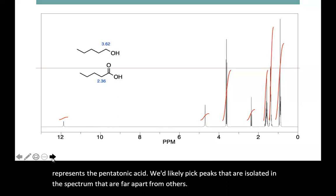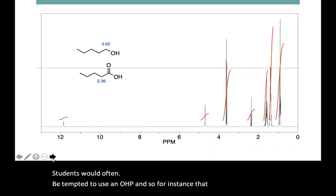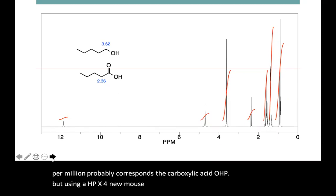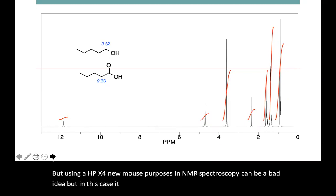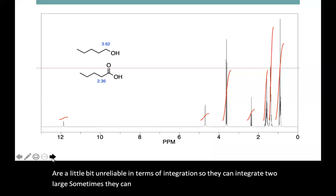Now, students would often be tempted to use an OH peak. For instance, that far left peak at 12 parts per million probably corresponds to the carboxylic acid OH peak. But using OH peaks for most purposes in NMR spectroscopy can be a bad idea, and in this case it is. OH peaks are a little bit unreliable in terms of integration — they can integrate too large sometimes, they can integrate too small other times. They're not a great tool for what we're going to do here.